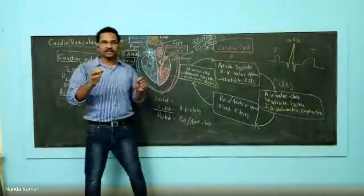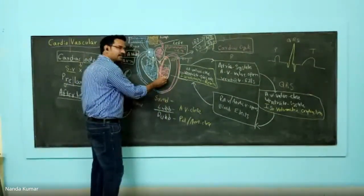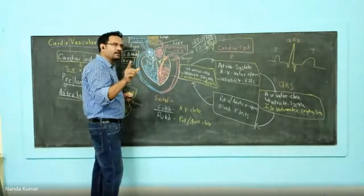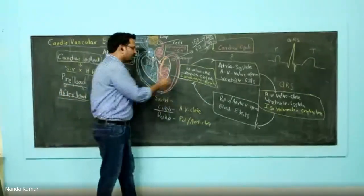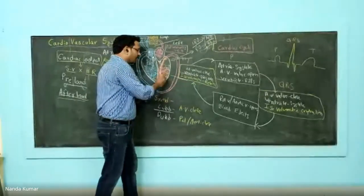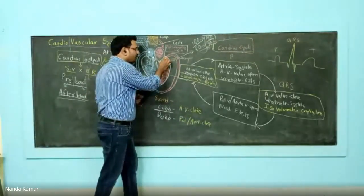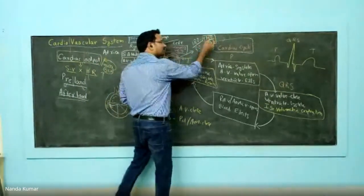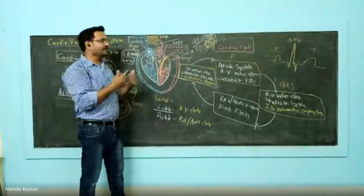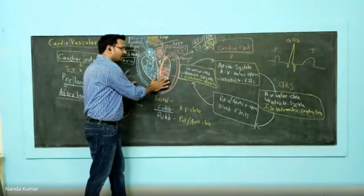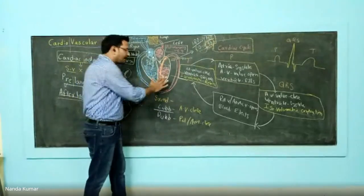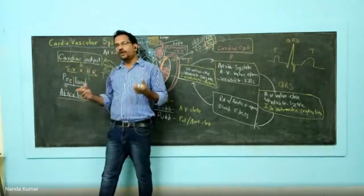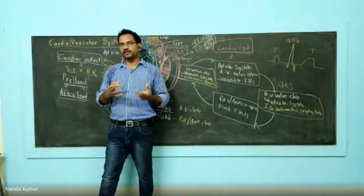Afterload is the pressure that must be exerted by the left ventricle to pump blood into the aorta. That is dependent upon diastolic blood pressure. If diastolic pressure is increasing, the workload of the heart increases, damaging the ventricular walls. Both preload and afterload talk about cardiac ventricular health.